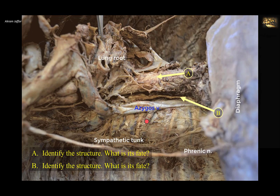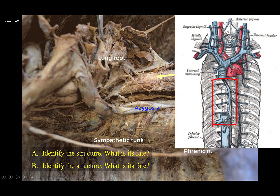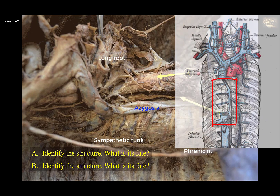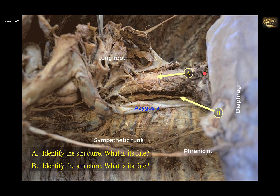The vertical vessel that continues as an arch over the root of the right lung is the azygous vein. Note that it receives posterior intercostal veins. The tubal structure A that descends down and passes through the diaphragm is actually located behind the heart — the heart has been removed from the middle mediastinum, as has the pericardium. Note that A is a muscular tube, vertically oriented, surrounded by a plexus of nerves partly derived from the vagus, which passes behind the lung root — this is the esophageal plexus. So A is the esophagus, passing through the esophageal hiatus in the diaphragm at the level of T10 vertebra.